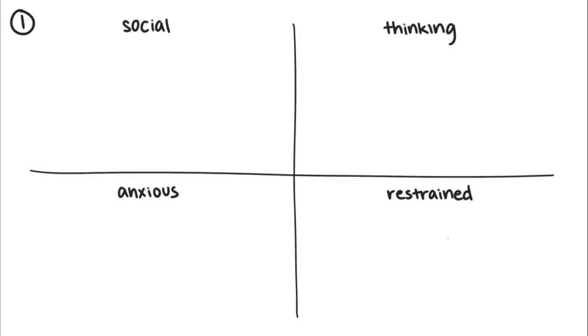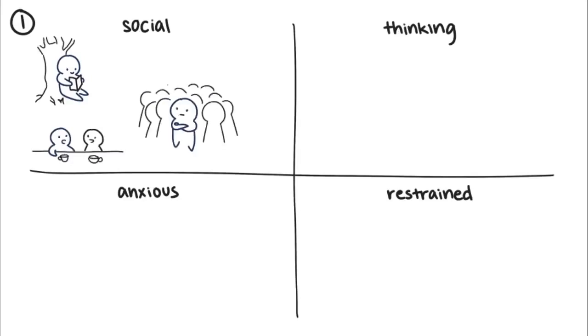Social introversion is what's commonly accepted and understood as the stereotypical definition of introversion. Social introverts prefer solitude or small groups of people over large gatherings. They'd rather stay home with a book or laptop or hang out with close friends than go to parties with many unfamiliar faces.